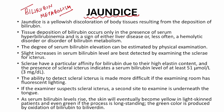Jaundice is a yellowish discoloration of the body tissues resulting from the deposition of bilirubin. When bilirubin is not excreted properly out of the body, it gets deposited in the tissues and causes yellow discoloration of various body parts. Tissue deposition of bilirubin occurs only in the presence of serum hyperbilirubinemia and is a sign of either liver disease, or less often a hemolytic disorder, or disorder of bilirubin metabolism.